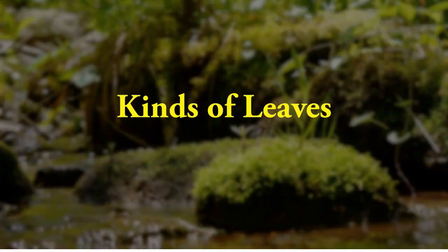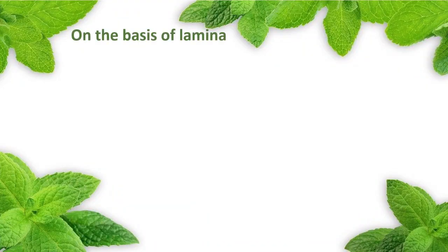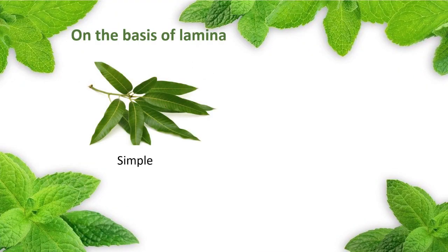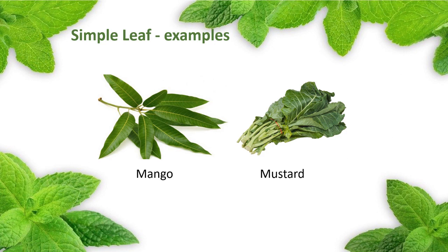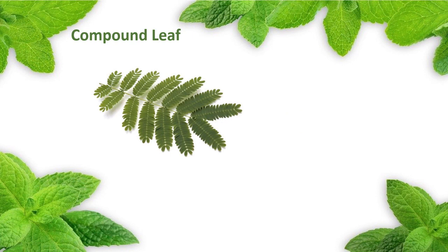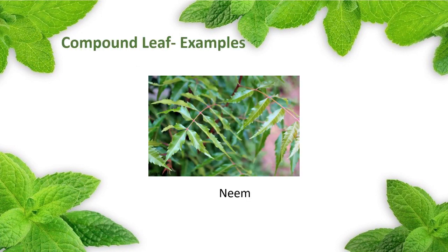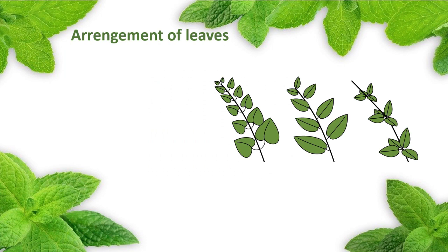Kinds of leaves — on the basis of lamina, leaves are of two kinds. 1. Simple leaf — it consists of a single and undivided lamina without any cut. In some cases the leaf blade may be slightly incised. Example: leaf of mango and mustard. 2. Compound leaf — when the lamina is cut down up to the midrib or petiole to form many leaflets, such a leaf is called a compound leaf.